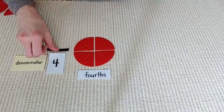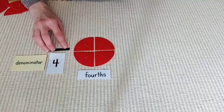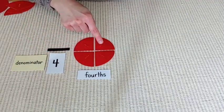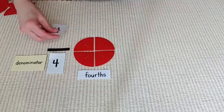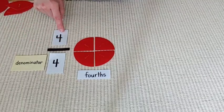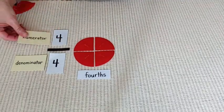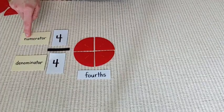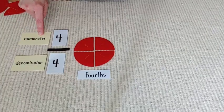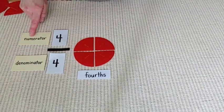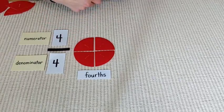I'm going to put my fraction bar here. Now, there are four people in the fourths family. So the number of people in a family is called the numerator. And it has the word numer in it. Numerator. And that will help me to remember that's the number of people in my family.